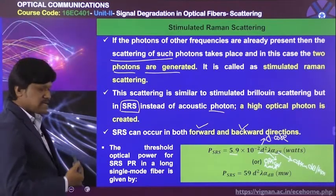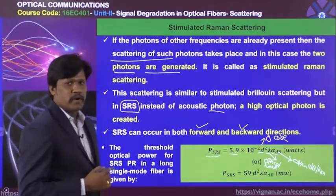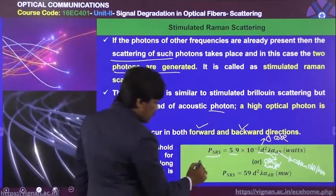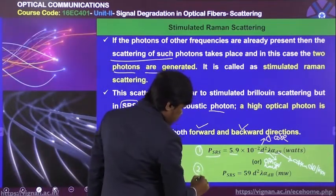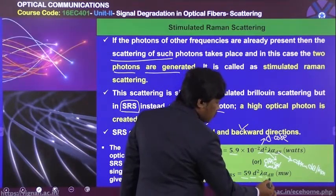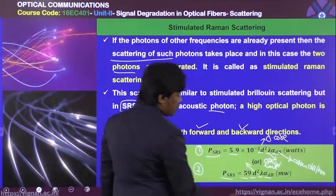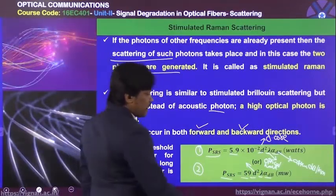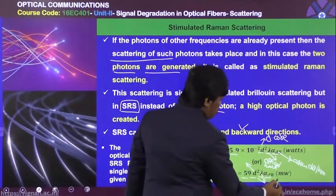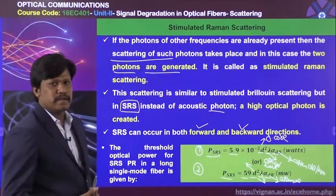The threshold optical power for SRS (stimulated Raman scattering) can be determined with: P_SRS = 5.9 × 10⁻² × D² × λ × α_dB in watts. If you want to calculate power in milliwatts, P_SRS = 59 × D² × λ × α_dB, where D is the core diameter of the optical fiber cable, λ is the optical wavelength, and α_dB is the attenuation in dB per kilometer.